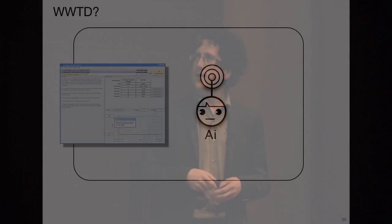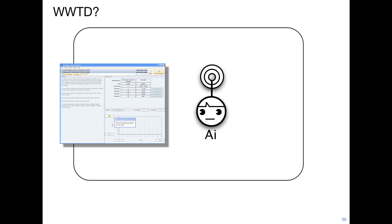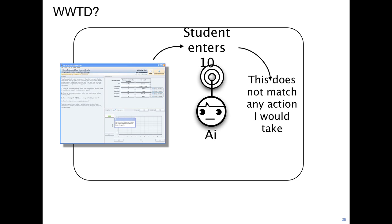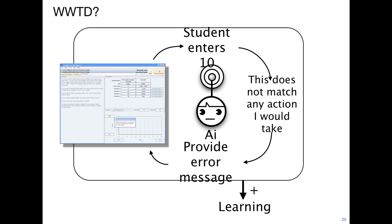How this works behind the scenes is that there's a small artificial intelligence program that knows all about solving algebra problems in many different ways. So when the student enters something into the program, the tutor thinks about all the ways it could solve the problem and sees if that matches what the student did. If the student did something that doesn't match all these different ways you could solve the problem, we know there's an issue, and the tutor provides feedback. We know from a lot of research that this is good for learning, although we're still learning about how it affects motivation.